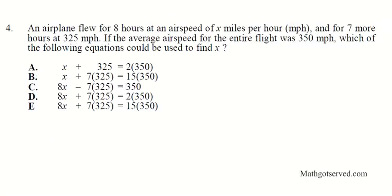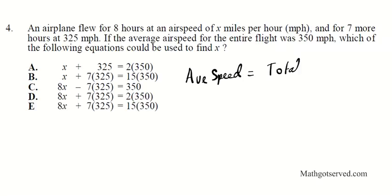Let's move on to question 4. It says an airplane flew 8 hours at an airspeed of x miles per hour and 7 hours at 325 miles per hour. If the average airspeed for the entire flight was 350 miles per hour, which equation could be used to find x? This is a distance-rate-time problem. The formula for average speed is total distance divided by total time.